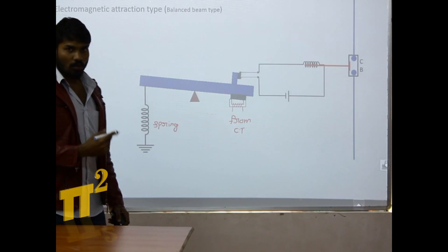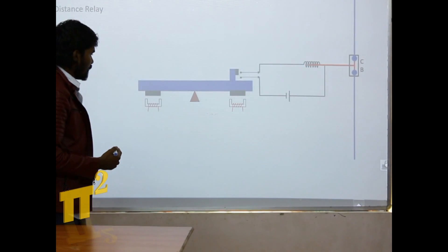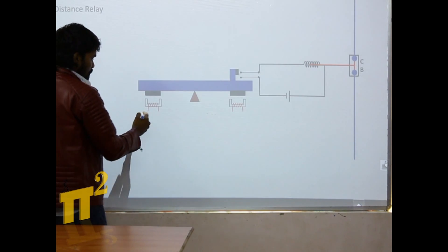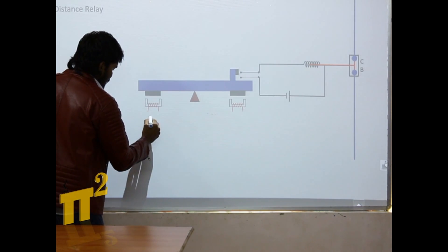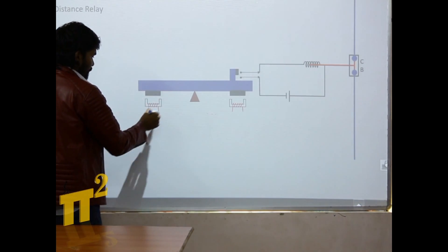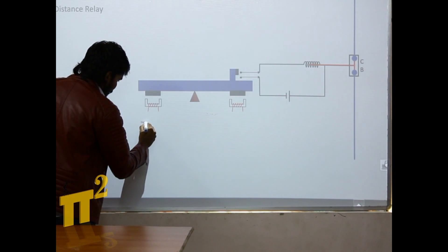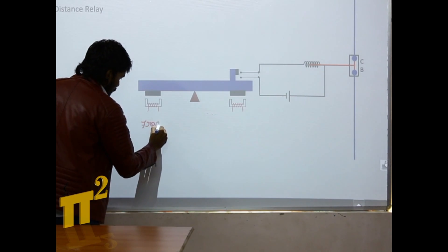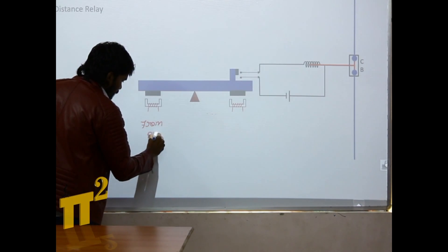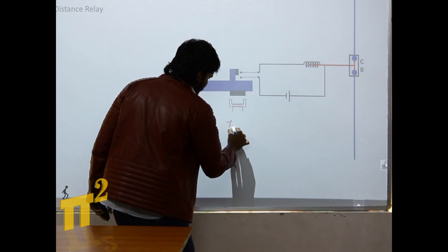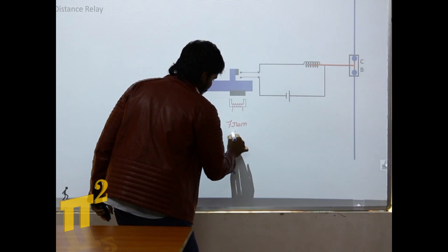So there is a small modification for this. Instead of using a spring, I will use another electromagnetic type, which is fed from a potential transformer. And this is fed as usual from the current transformer.